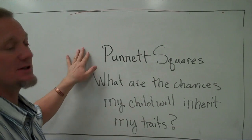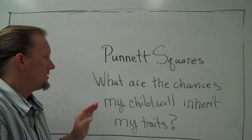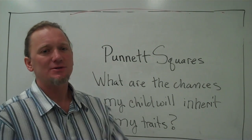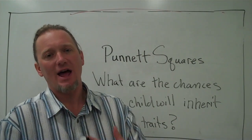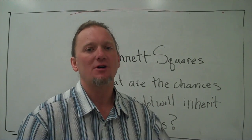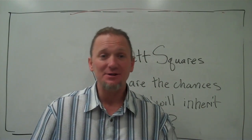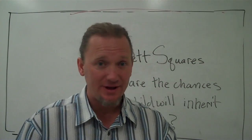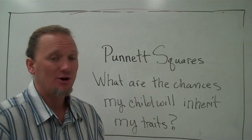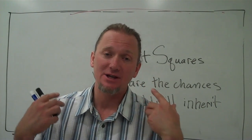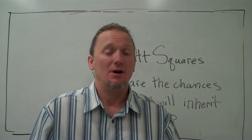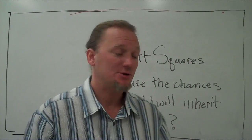This one is titled 'Punnett Squares: What are the chances my child will inherit my traits?' It's used for two things: for people who want to have children and want to know the likelihood of inheriting particular combinations of alleles — which alleles will they get. It's also used to look back into your family history to determine what your genotype is based on what your parental genotypes are.